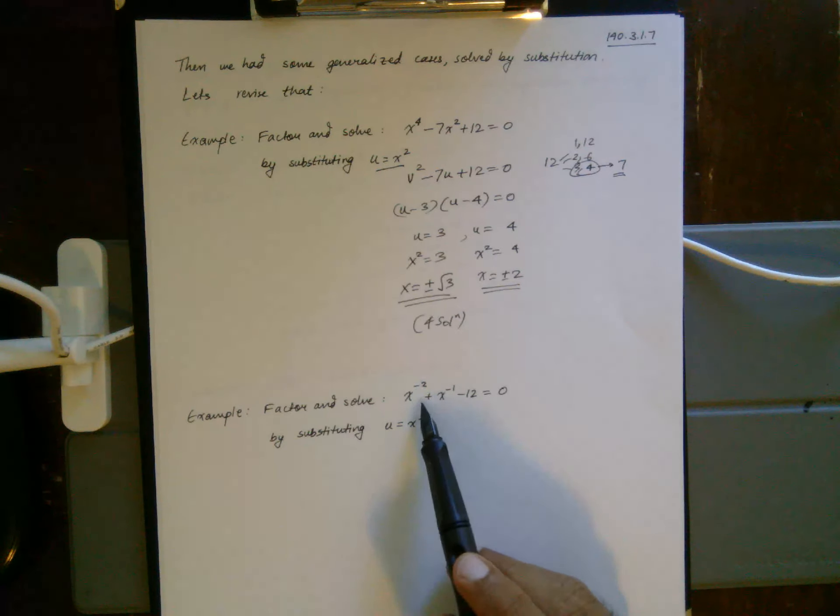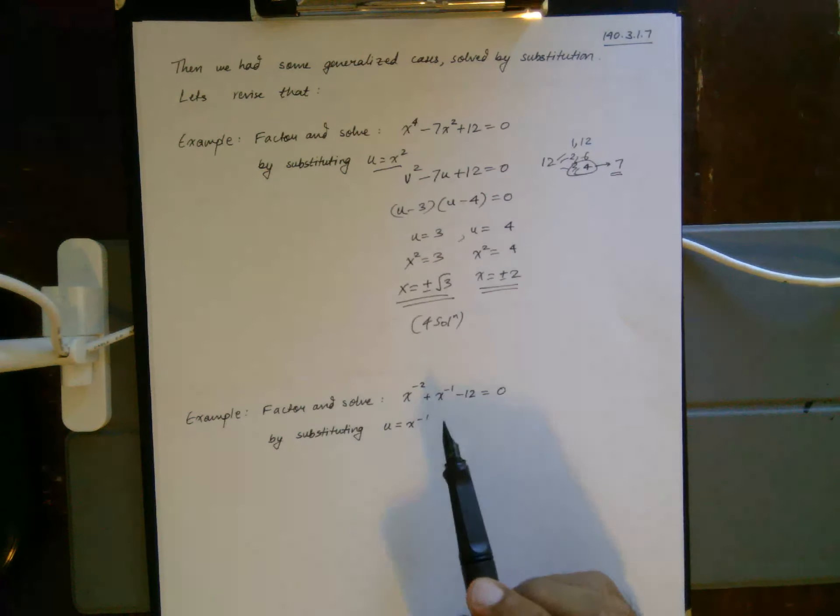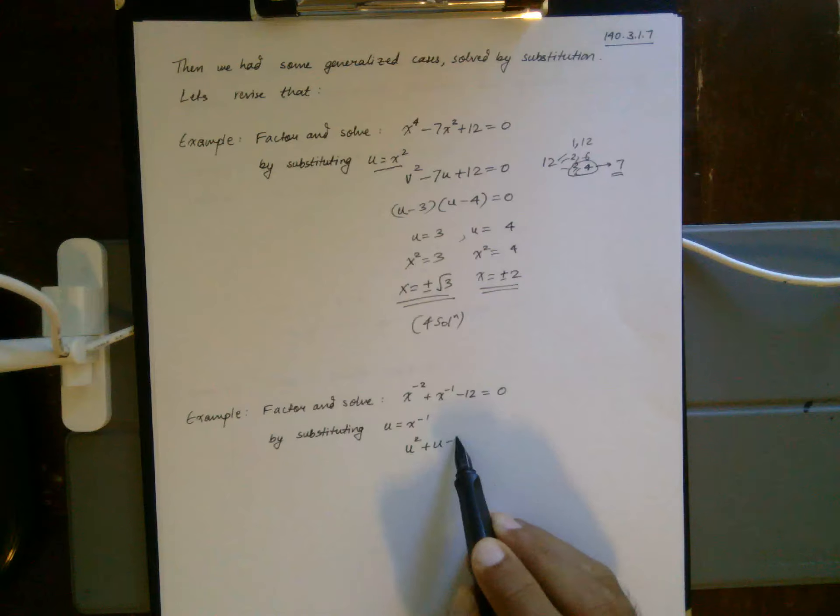Okay, another example. Now it's not even a polynomial, because it's negative exponent, meaning it's actually 1 over x², but I can do the same thing. I can let u equal x^(-1), and this becomes u² plus u minus 12.